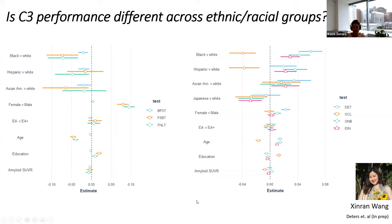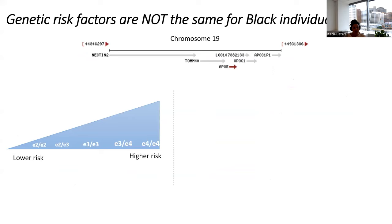Next, I want to talk about genetic risk factors and how they are not the same in Black individuals. On chromosome 19 lie two genes that confer risk for cognitive impairment and Alzheimer's disease. First is the APOE gene, containing three alleles: E2, thought to be protective; E3, the common allele present in the majority of the population; and E4, the risk allele for Alzheimer's disease and cognitive impairment, which functions in a dose-dependent manner, such that two copies of E4 confer higher risk than one.